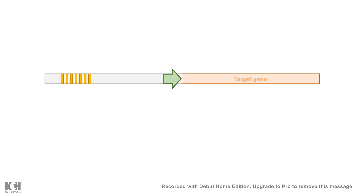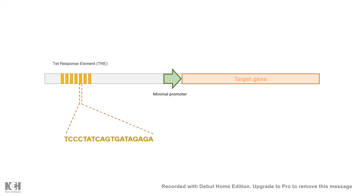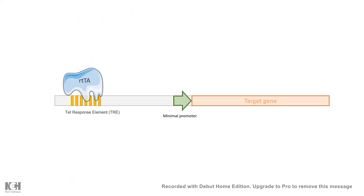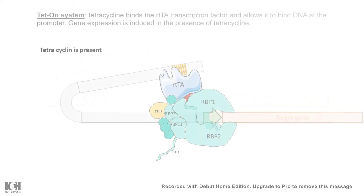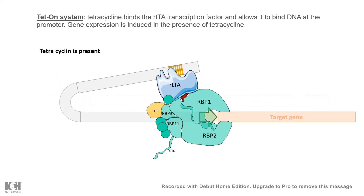The target gene is placed under a minimal promoter — marked here in green — which could be a CMV promoter. You also have another element: the tetracycline response element (TRE), which consists of several repetitions where rtTA can bind. What rtTA does is cause folding and looping of the DNA in the presence of tetracycline.